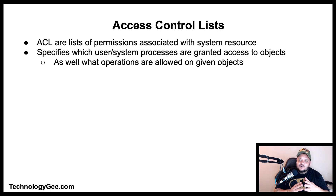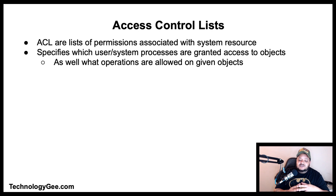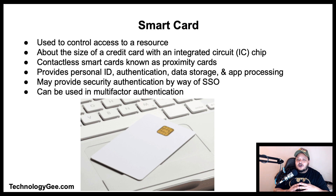An access control list is a list of permissions associated with system resources. An access control list specifies which users or system processes are granted access to objects, as well as what operations are allowed on given objects.